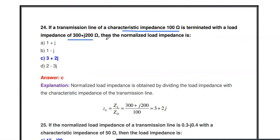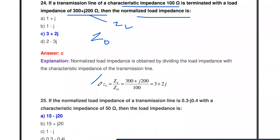Next question: If a transmission line of characteristics impedance 100 ohms is terminated with a load of 300 + j200 ohm, then the normalized load impedance is what? Using the formula: normalized ZL = load impedance / characteristics impedance = (300 + j200) / 100 = 3 + j2. So the normalized load impedance is 3 + 2j, and this point is marked on the Smith chart.